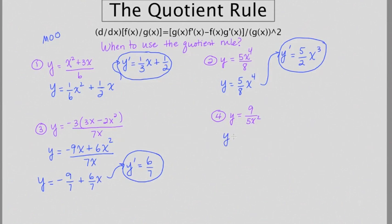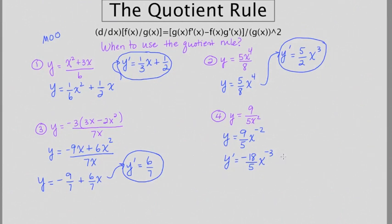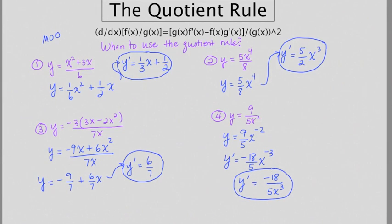Finally, example four can be rewritten as nine over five times x to the negative two by moving the x power up and making it negative. The derivative becomes negative eighteen-fifths x to the negative three. Since we can't leave a final answer with negative exponents, the answer is negative eighteen over five x cubed. Just seeing a fraction doesn't guarantee you'll use the quotient rule — avoid it when possible.